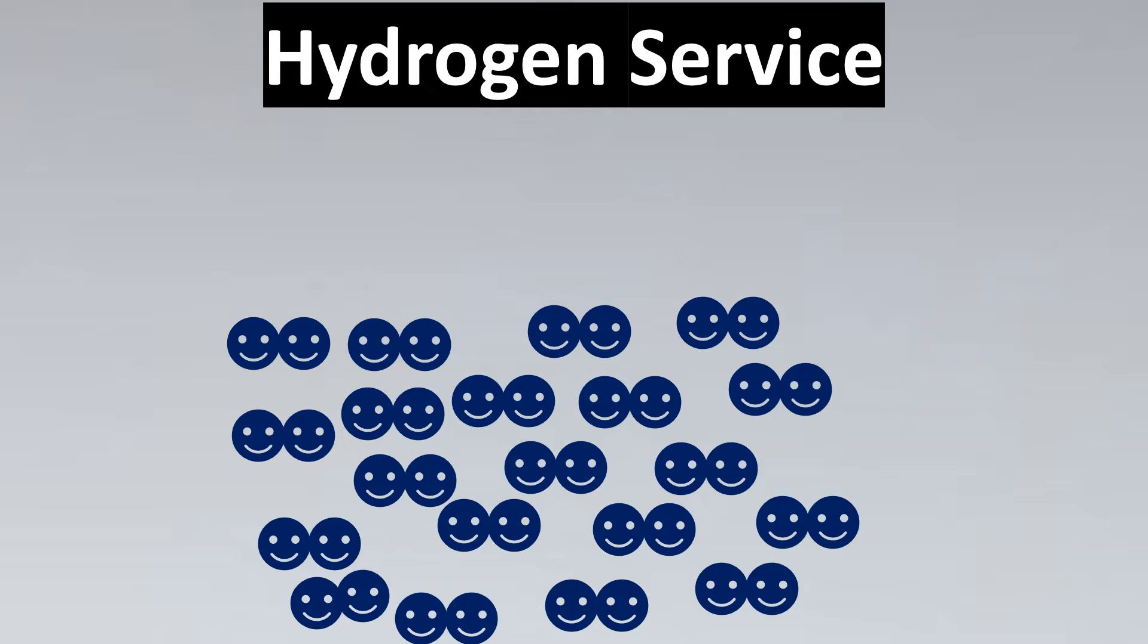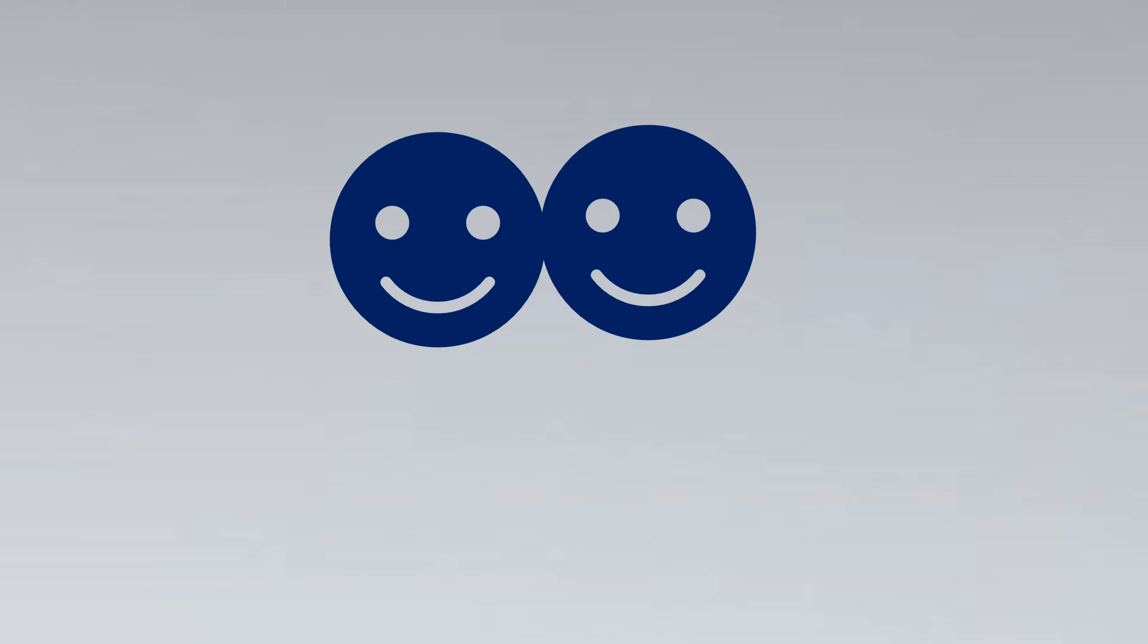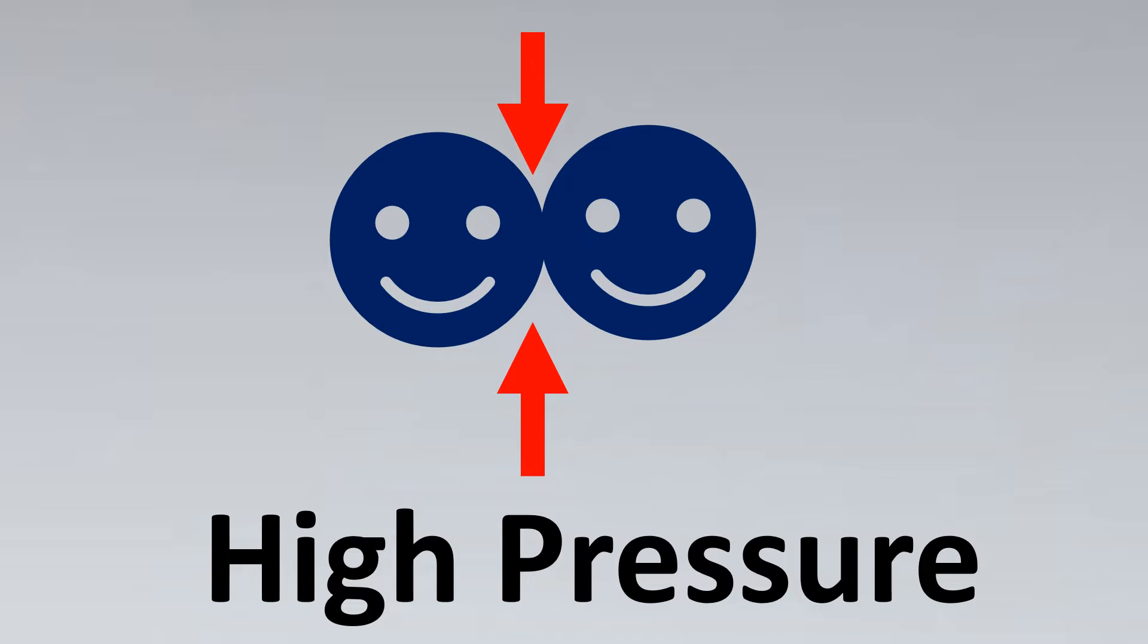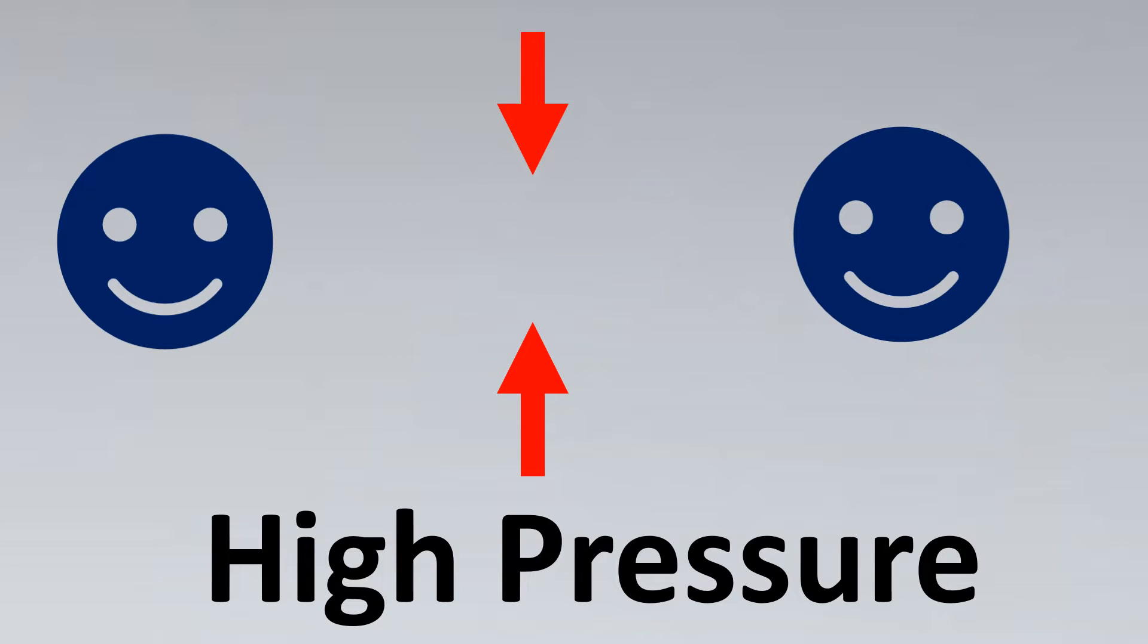You can see the small H2 molecules floating together, but what happens if we apply high pressure to it? When we apply high pressure to these molecules, because of such high pressure the molecules will break and the bond will go away. These minuscule atoms will then get separated.